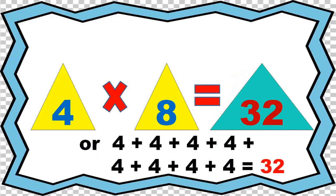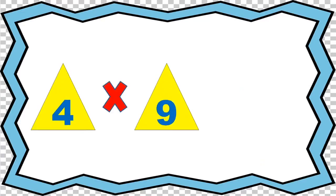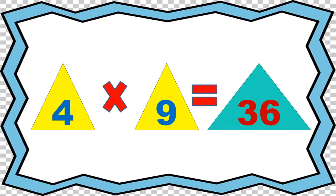4 times 8 equals 32, or 4 plus 4 plus 4 plus 4 plus 4 plus 4 plus 4 plus 4 equals 32. 4 times 9 equals 36.